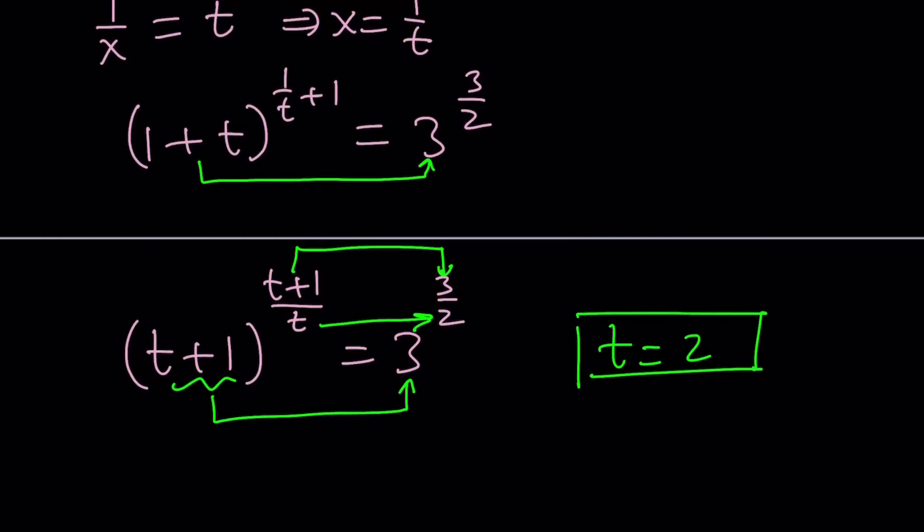But of course, we are looking at the one-to-one correspondence. If t equals 2, those expressions are definitely going to be equal. But of course, if there are any other solutions, we have to find them.